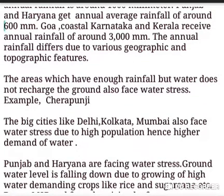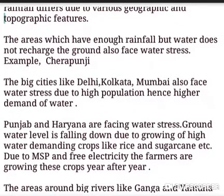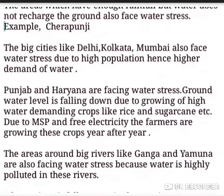Annual rainfall differences are due to various geographic and topographic features. It has been observed that areas with enough rainfall can still face water stress if groundwater does not recharge properly. Cherrapunji is a classic example of this — despite very high rainfall, it experiences water stress.